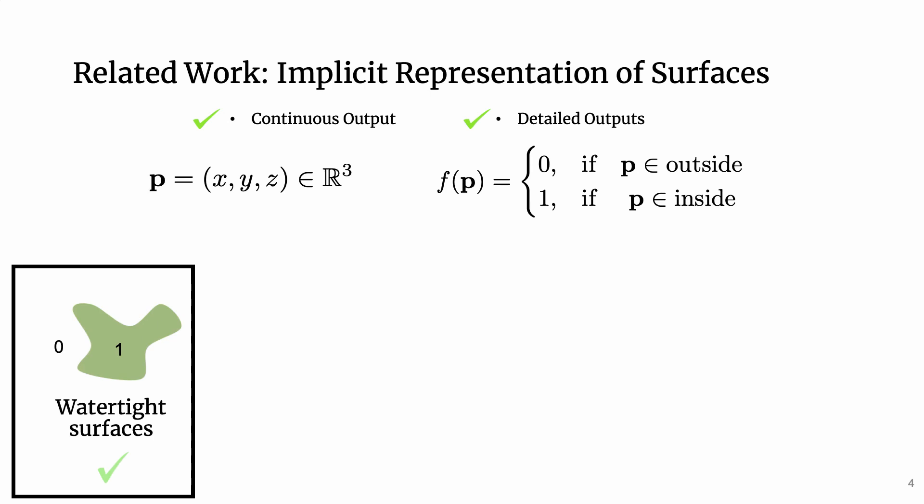Implicit learning aims to learn a function that for each point in space decides if it's inside or outside the shape. The surface is then represented by points at the boundary between inside and outside. This representation works well for surfaces that are watertight.